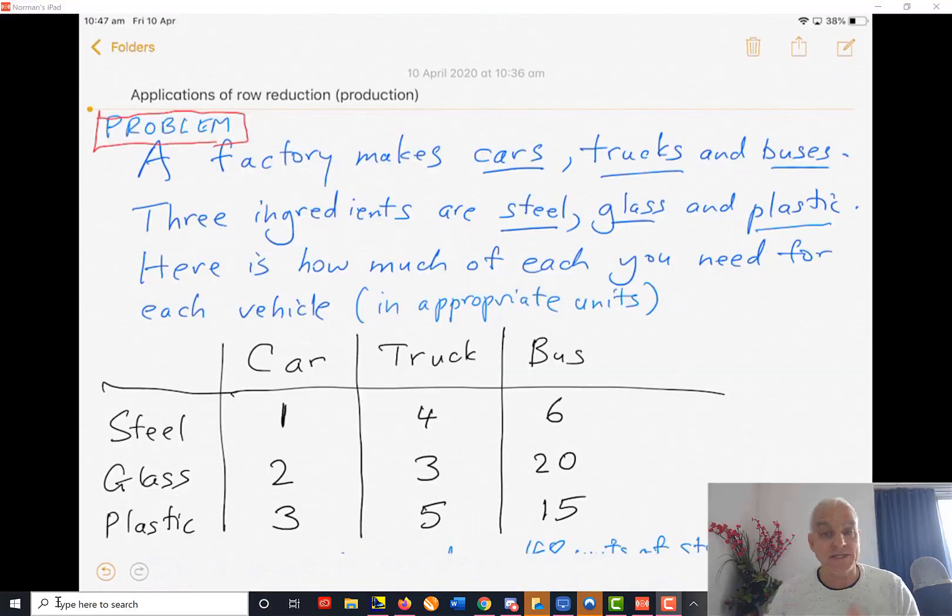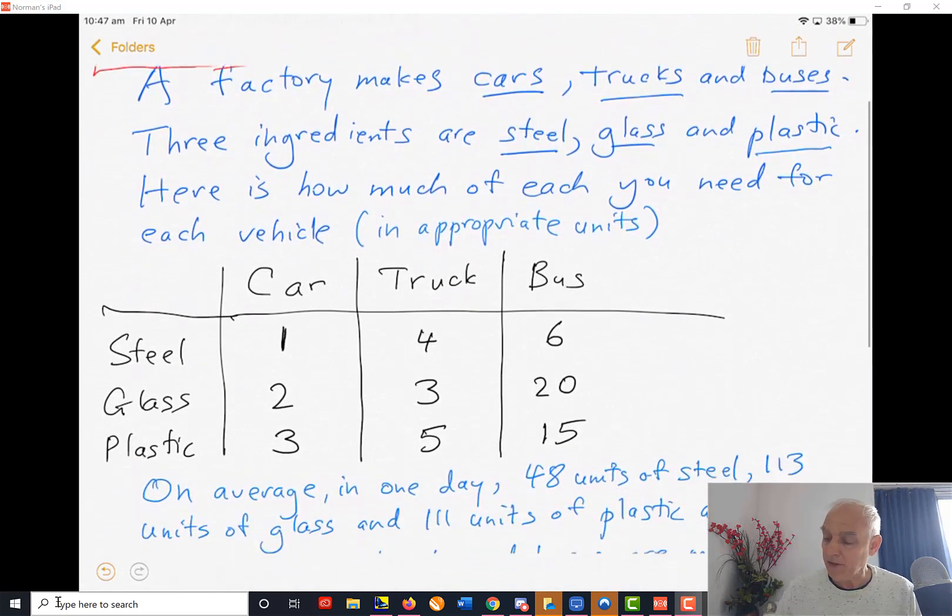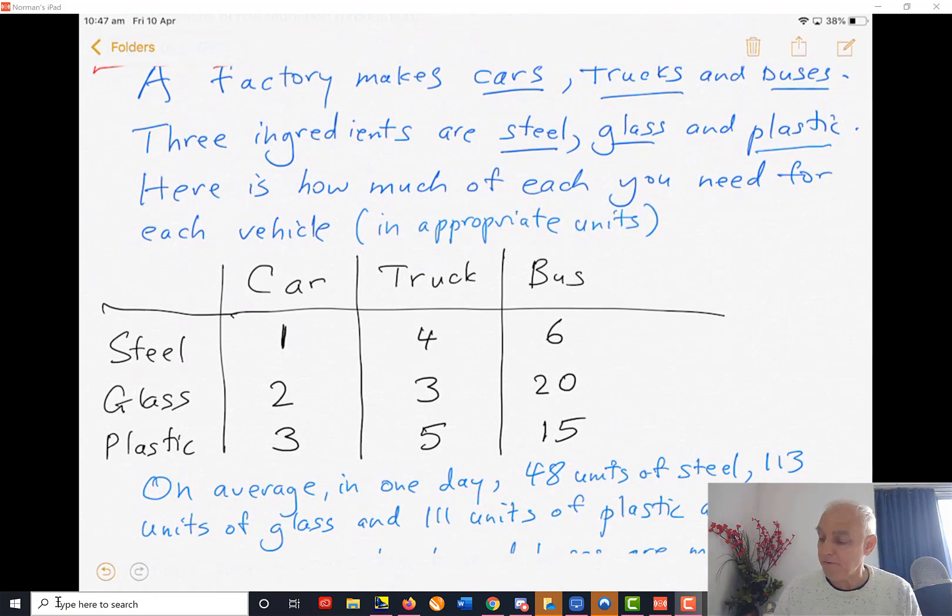Three ingredients to make these things are steel, glass, and plastic. To make a car you need one unit of steel, for a truck four units, for a bus six units. In terms of glass: two units for a car, three for a truck, 20 for a bus. And plastic: three units for a car, five for a truck, and 15 for a bus.